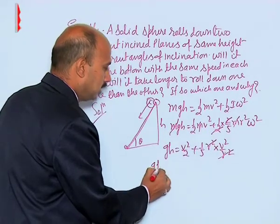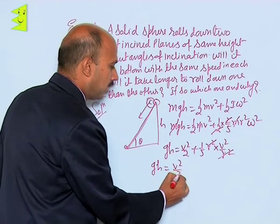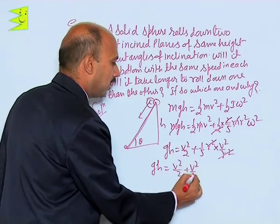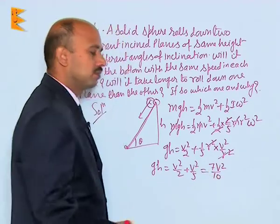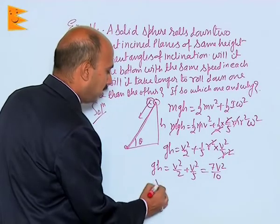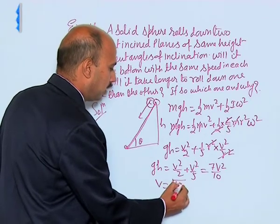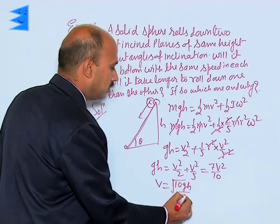So, we will be getting gh is equal to v²/2 plus v²/5, that is 7v²/10. So, we will be getting v is equal to square root of 10gh/7.